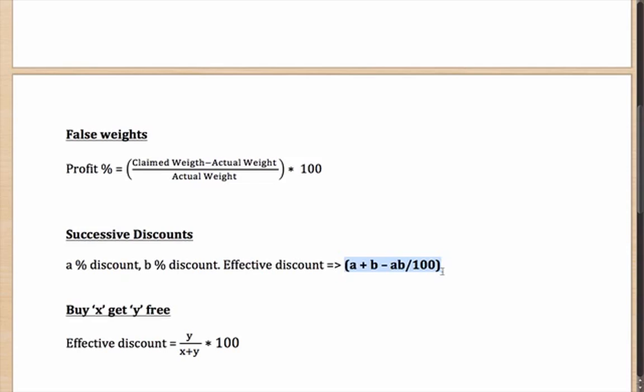a discount of 50% and then 40%, your overall discount is not 50 + 40 = 90%, but it is 50 for a, 40 for b, minus (50 × 40)/100 which is 2000/100 or 20. Your overall discount will be 50 + 40 - 20, which essentially leads to 70%. So you can use this particular formula.